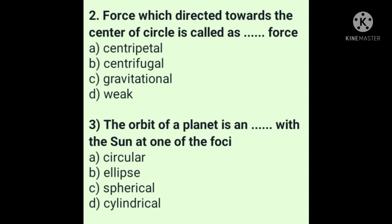Question 3: The orbit of a planet is an ellipse with the sun at one of the foci. Answer is option B: ellipse. This is Kepler's first law — every planet in our solar system follows an elliptical path.